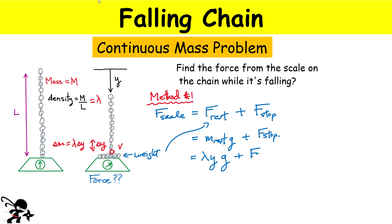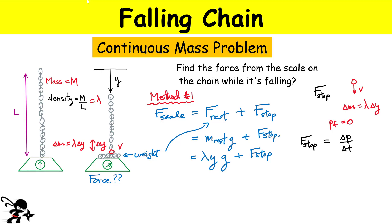Now let's deal with F_stop. We have one link of mass delta-M moving at speed V. Its mass is lambda times the small length delta-Y. Initially it has momentum; finally its momentum is zero because it comes to rest. So the force to stop that link is the change in momentum over change in time: F_stop = delta-P / delta-t. Since P_final = 0, we're left with the initial momentum divided by delta-t.